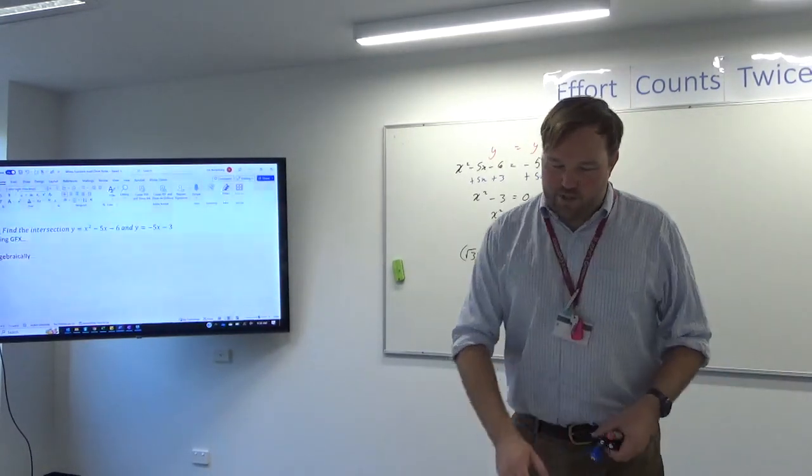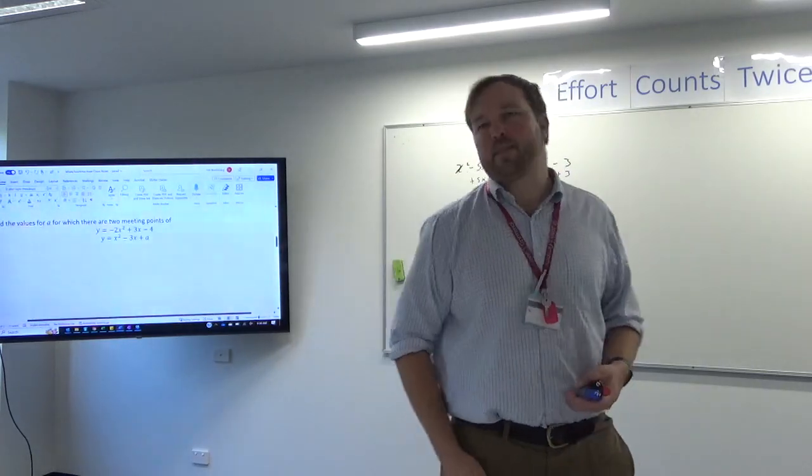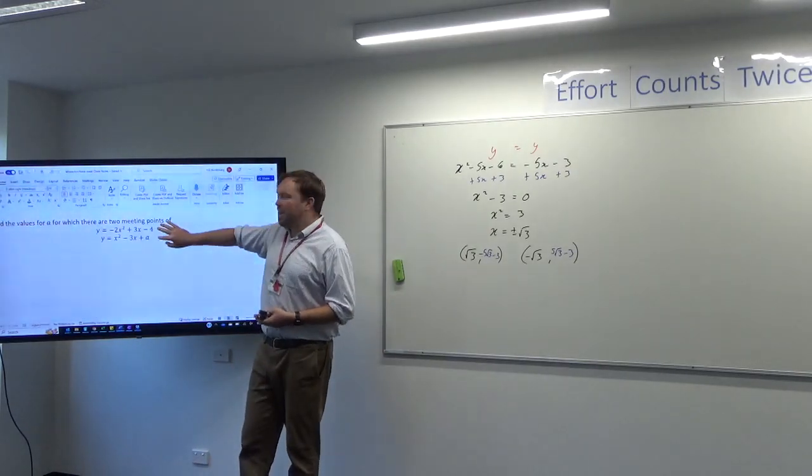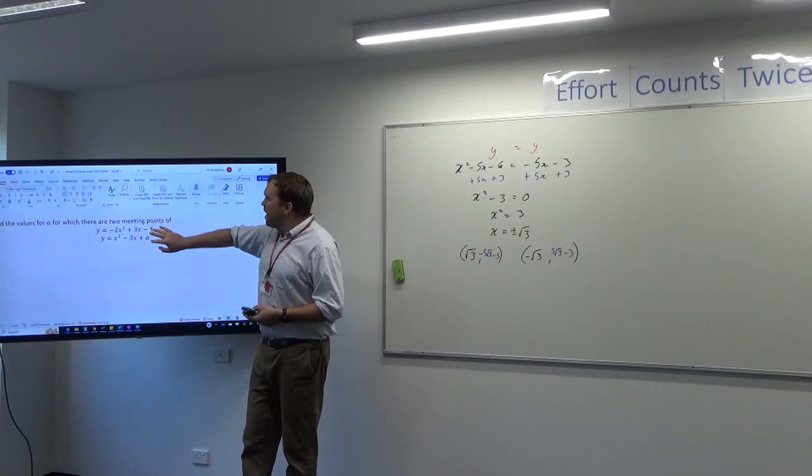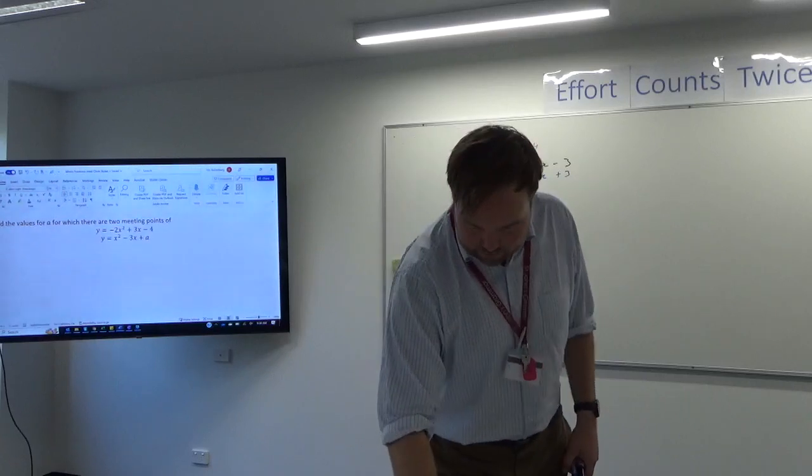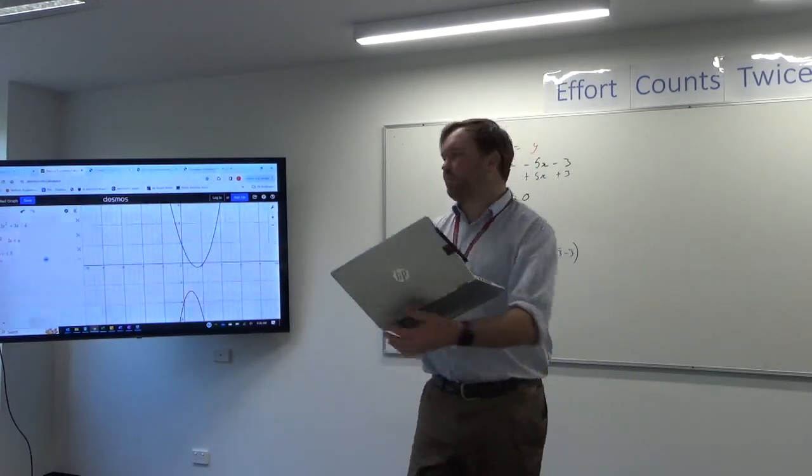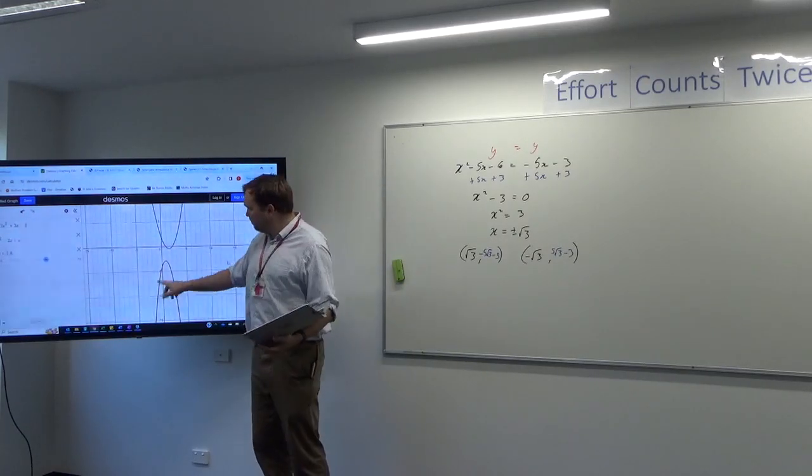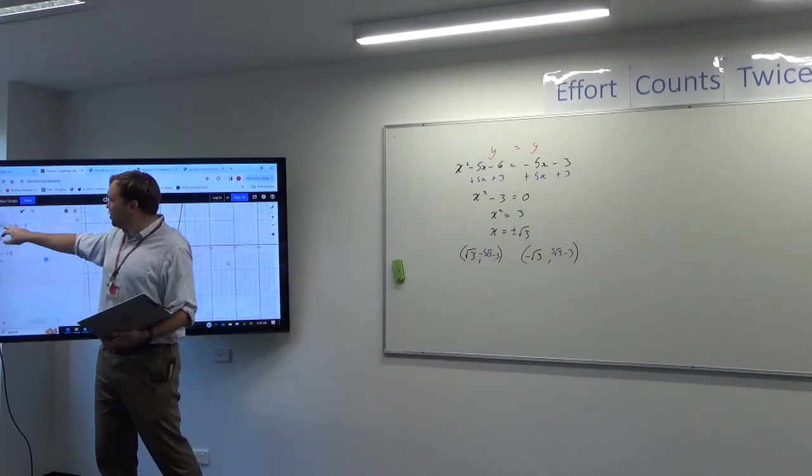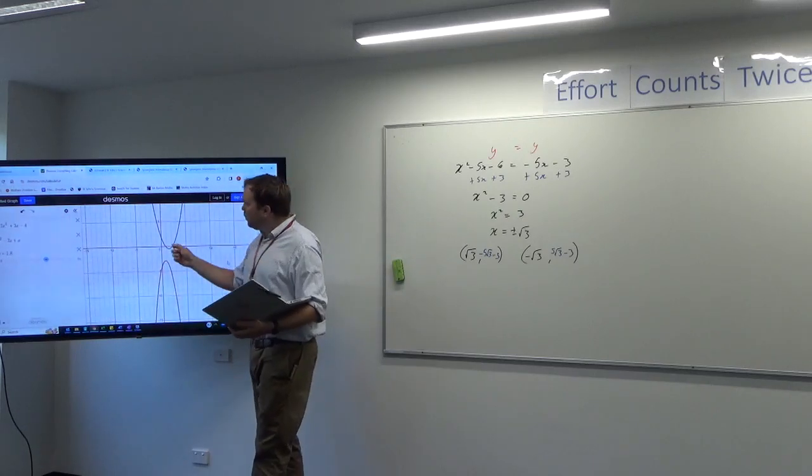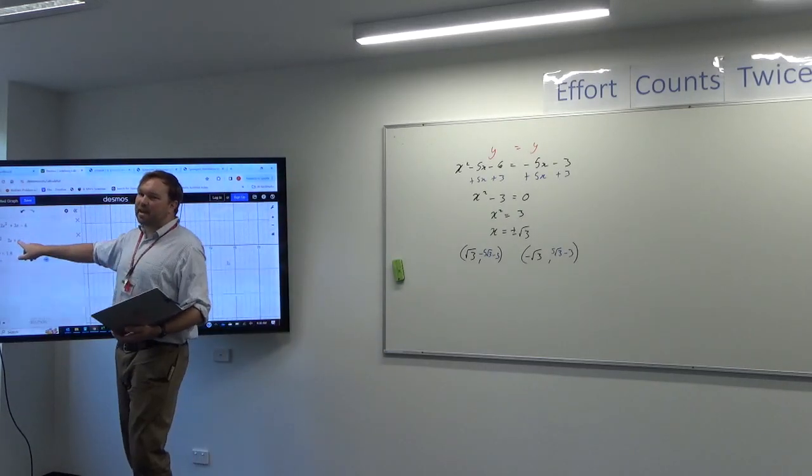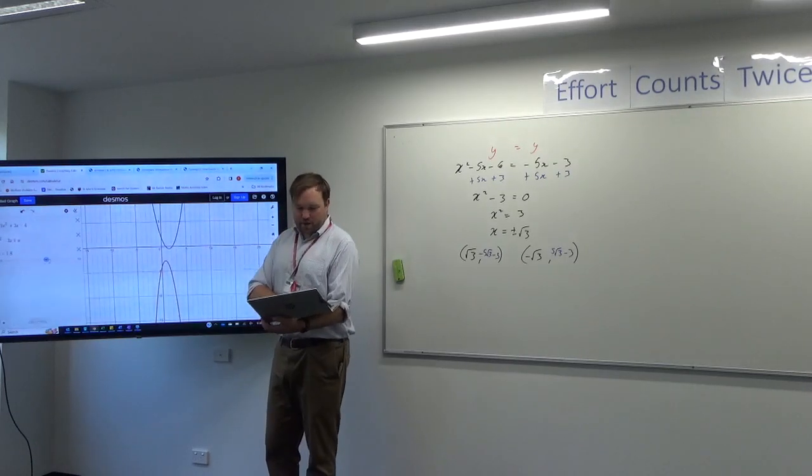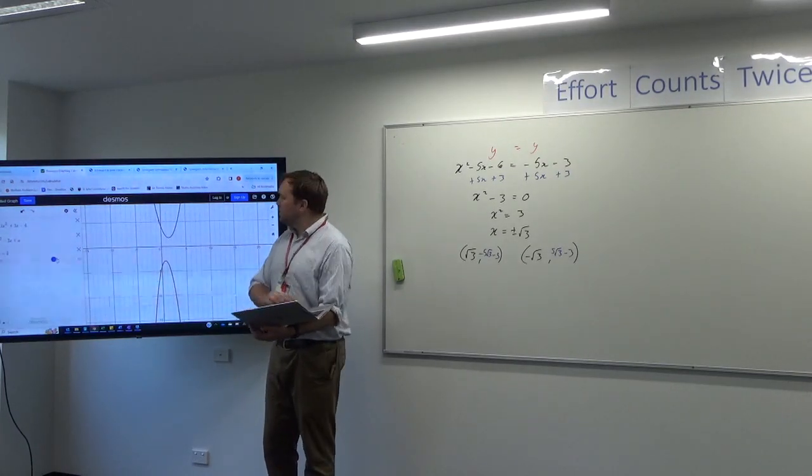The second type of question they're likely to ask you is this one: Find the value for A for which there are two meeting points. And what they've got here is a pair of quadratics. And just to help you visualize it, here's something I prepared earlier. These are the quadratics on decimals. The red one is fixed, that's the top one. That equation doesn't change at all, so it stays there. The blue one, however, has this A hanging on the end.